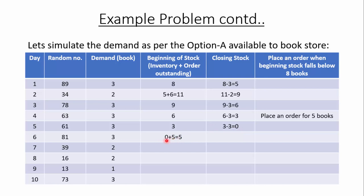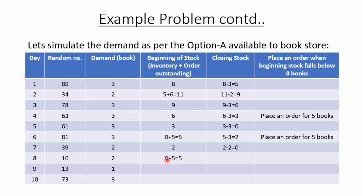At the beginning of day 6 the stock is 5 — 0 inventory from the previous day plus 5 from the order delivered — which is less than 8 and there is no further order outstanding, so we place an order for 5 books. This order will be received at the beginning of day 8. On day 6 the demand is 3, so the closing stock is 2. At the beginning of day 7 the stock is 2 and the demand is 2, so the closing stock is 0.